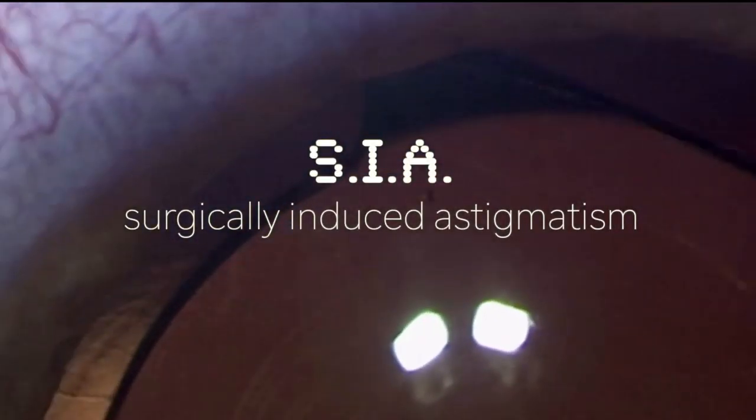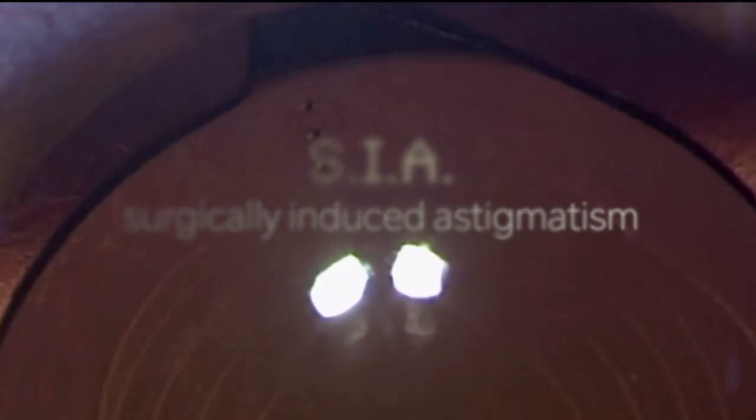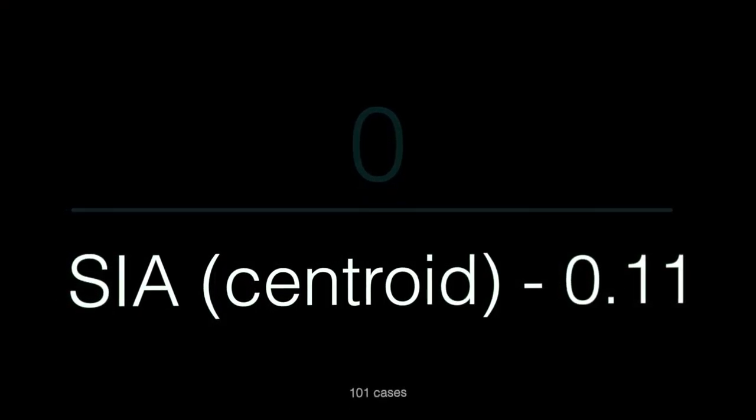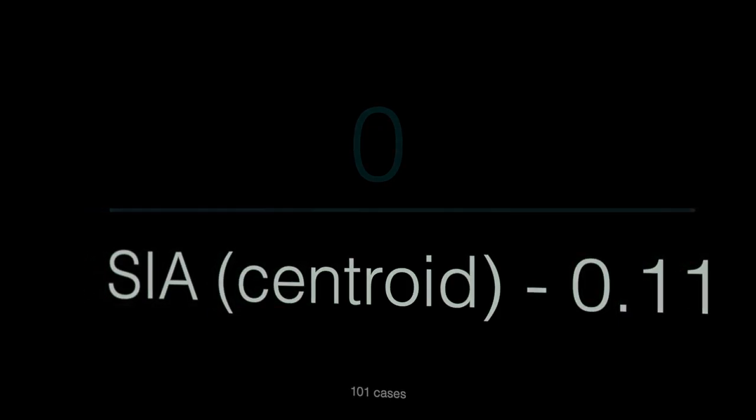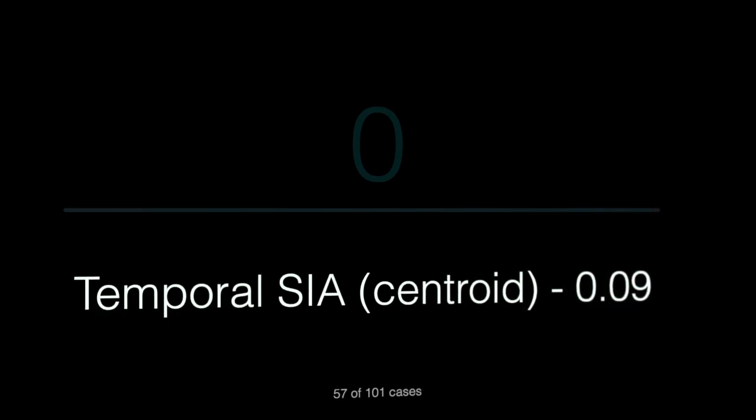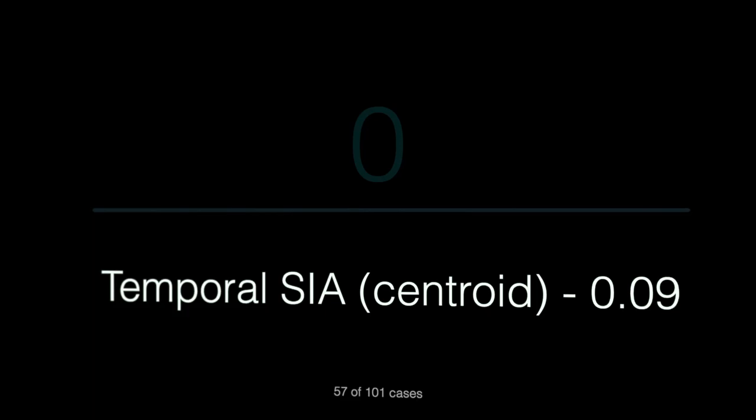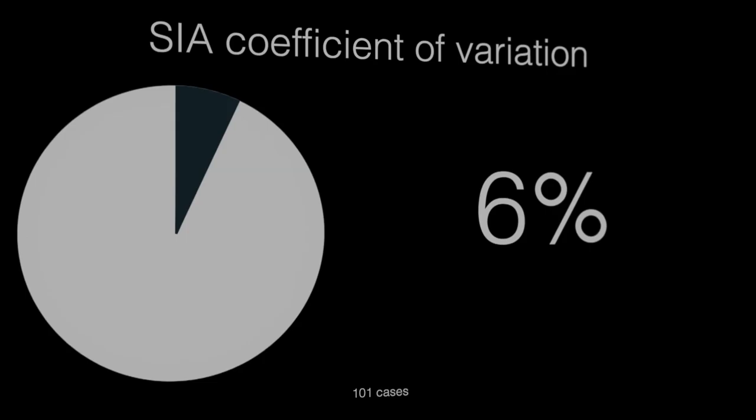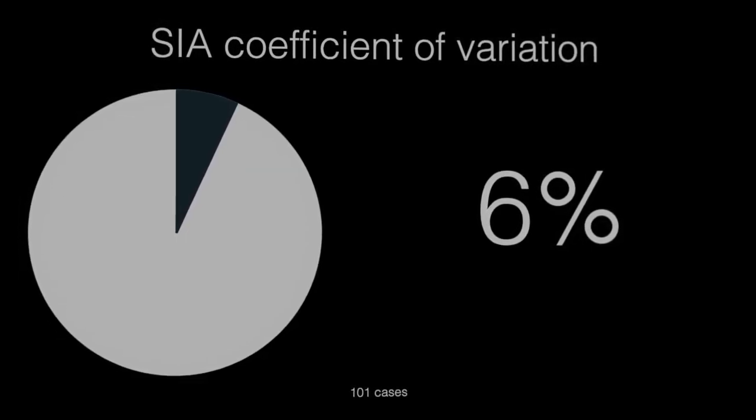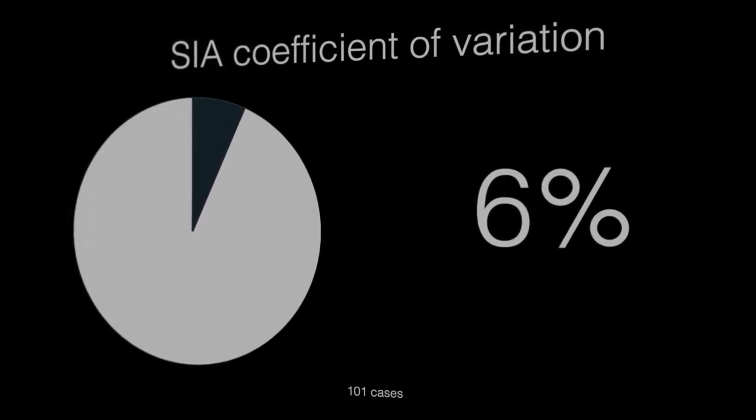Surgically induced astigmatism is an important indicator. This SIA should be known and used for calculating toric IOLs. Overall results showed a mean SIA of 0.11. When we observe only temporal incisions, we see a decrease to 0.09 diopters. Variation of the SIA using femtosecond laser in these parameters was very low, approximately 6%, which demonstrates a very standard procedure.